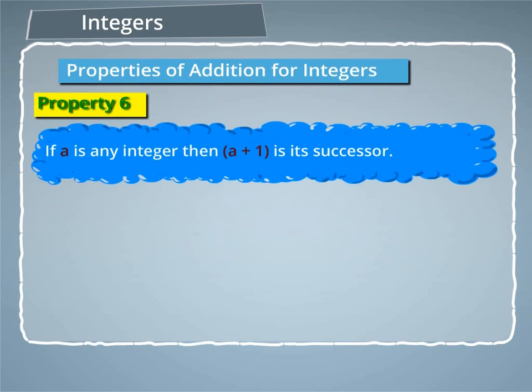Property 6: If A is any integer, then A plus 1 is its successor.